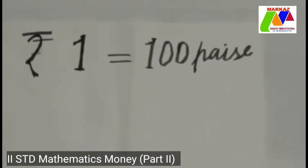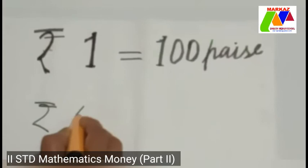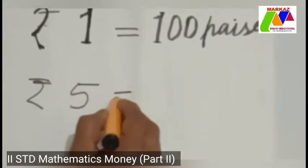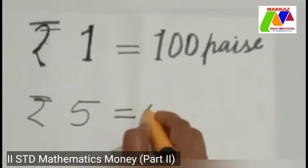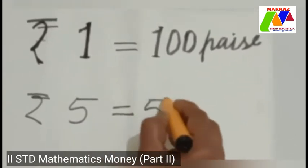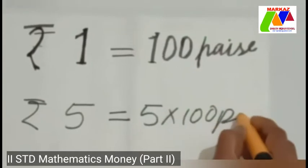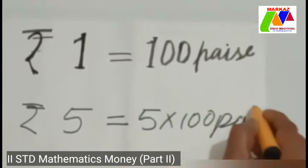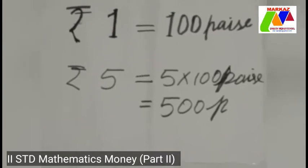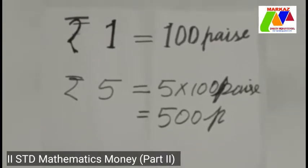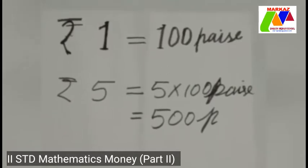So children, rupees five — how many paise? Yes, five into hundred paise. Five into hundred paise is equal to five hundred paise. Five rupees is equal to five hundred paise.